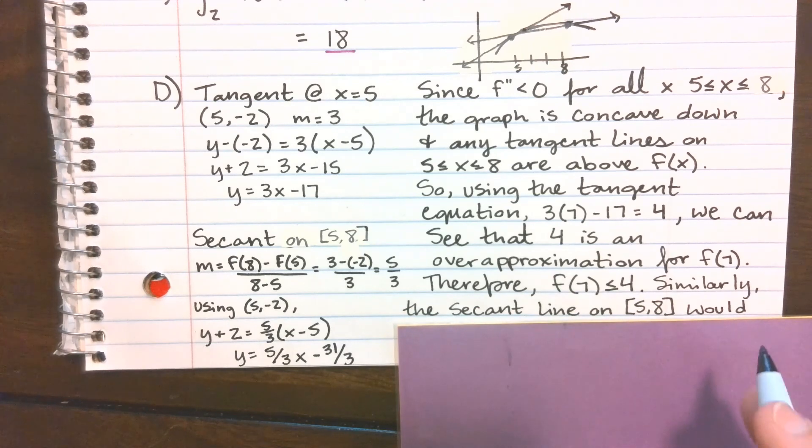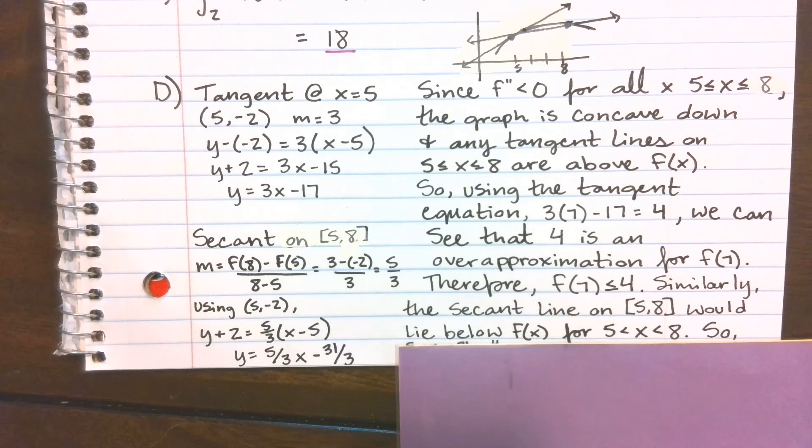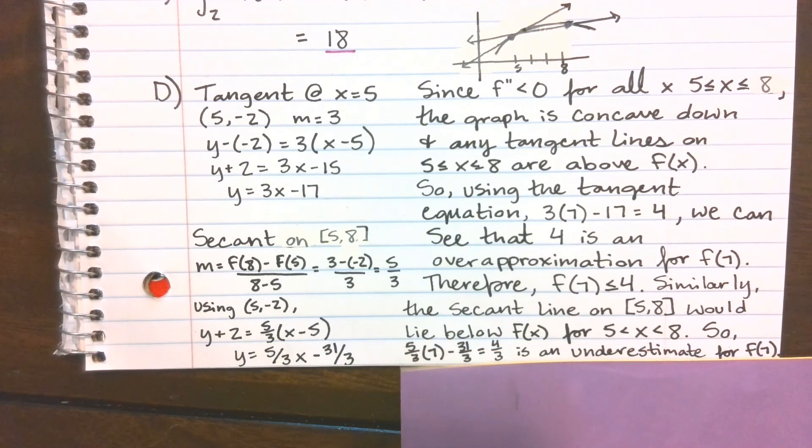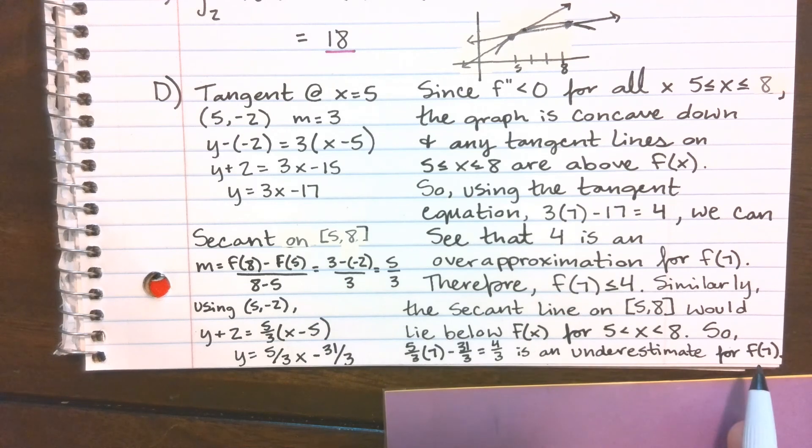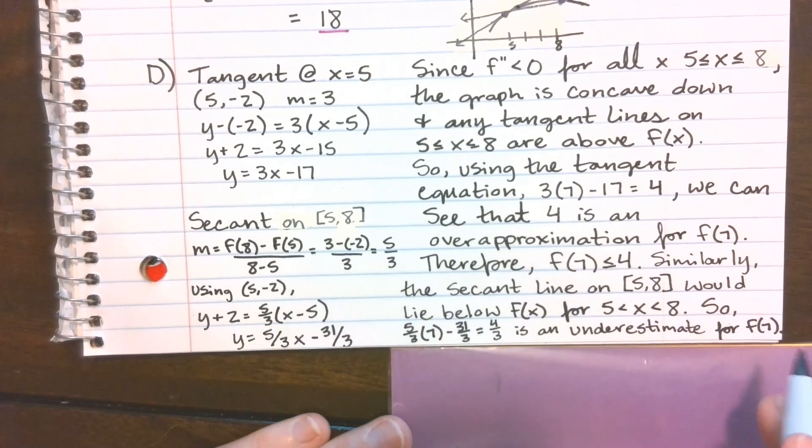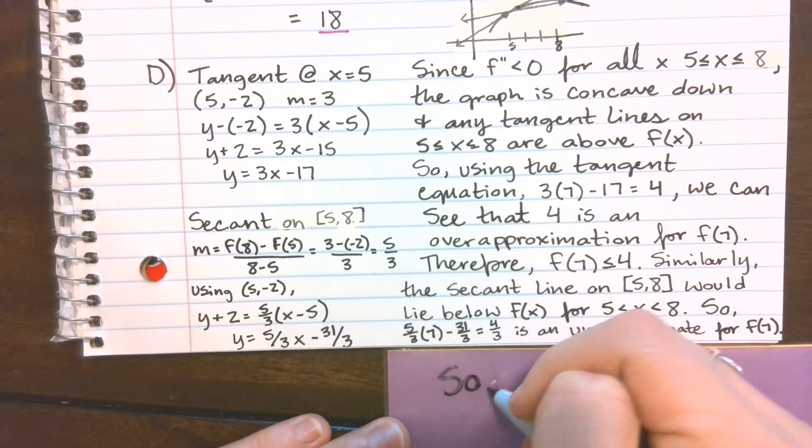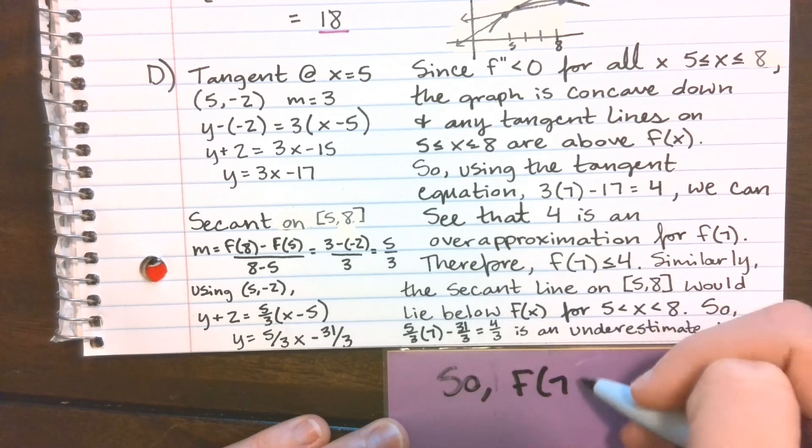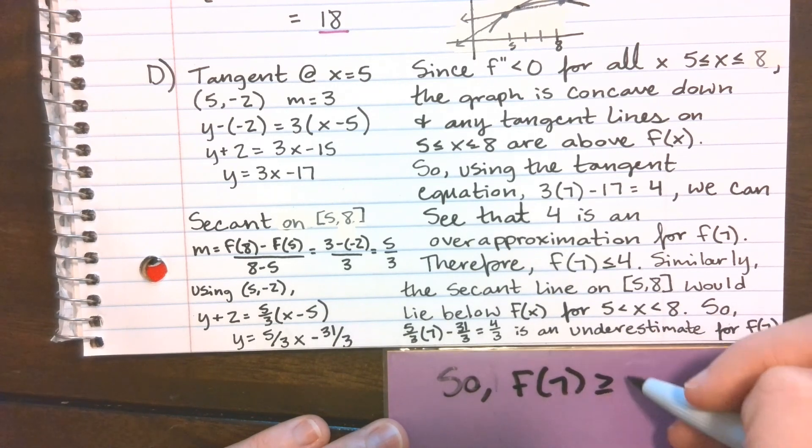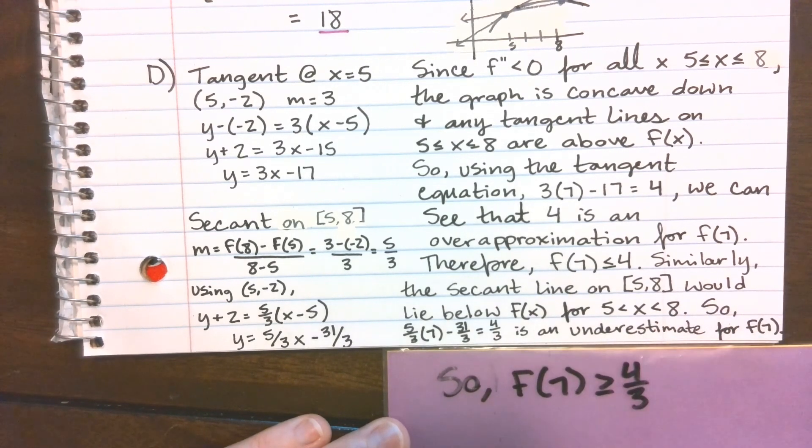So I kind of ran out of room here, but I just said similarly that secant line on 5 to 8 would lie below f of x. So kind of giving that reasoning for 5 to 8. So if we plug that in, we get 4 thirds. It is an underestimate for f of 7. And then if I had a little bit of room left, I would have just said, so f of 7 is greater than or equal to 4 thirds. So just finishing it out with what they were actually wanting me to prove.